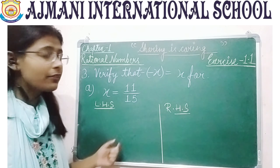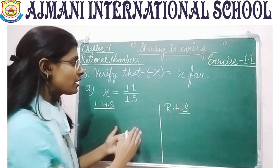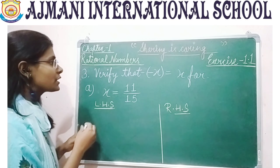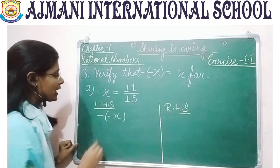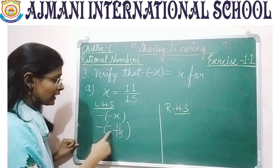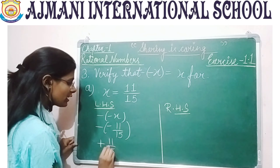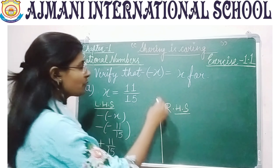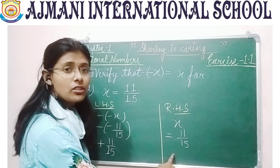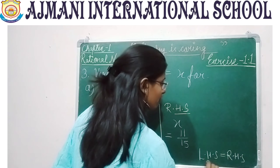Here the value of x is 11 by 15 and you need to divide your answer into two parts: LHS (left hand side) and RHS (right hand side). On the left hand side, minus of minus x means minus of minus 11 by 15. When minus and minus are multiplied you get a plus sign, so LHS equals 11 by 15. On the right hand side, x equals 11 by 15. Since LHS equals RHS, it is verified.